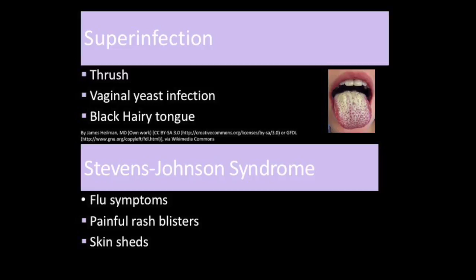With a black hairy tongue, there is an abnormal coating on the tongue which makes it appear black and furry. You may also notice the word Stevens-Johnson syndrome listed on many antibiotics as an adverse effect. This is a hypersensitivity reaction—a life-threatening skin condition in which cell death causes the epidermis to separate from the dermis. The patient can first have flu symptoms, and then a painful rash and blisters will appear.